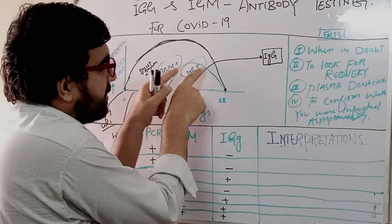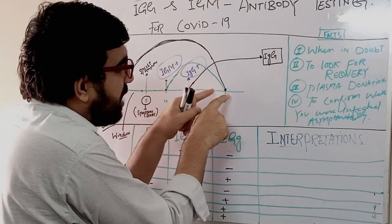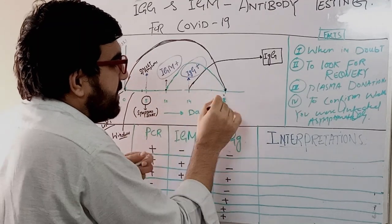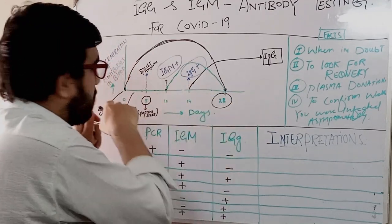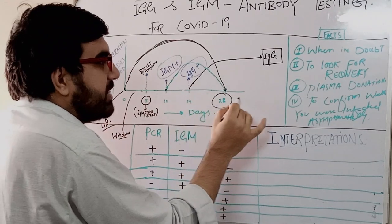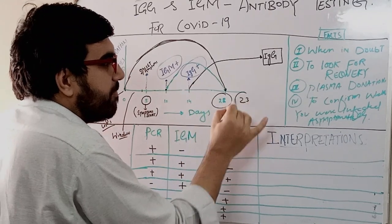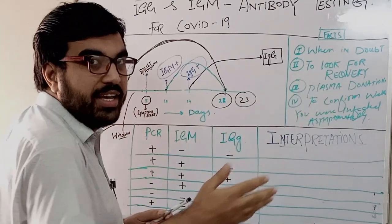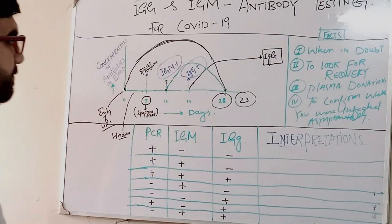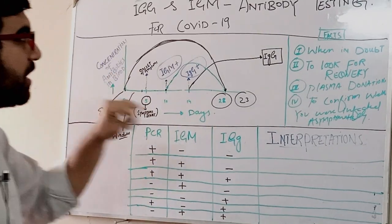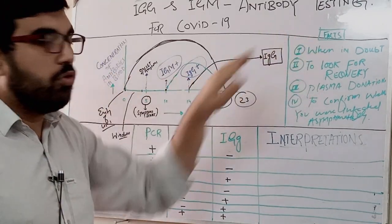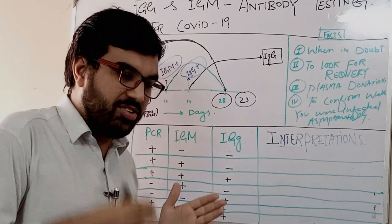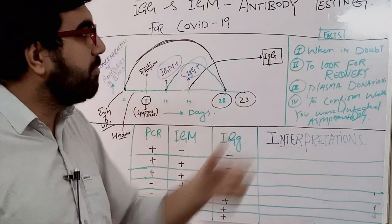IgM becomes undetectable at the 28th day of the whole cycle, or the 23rd day of onset of symptoms. So if you test for IgM after 23 days of symptom onset, it will not be detectable.